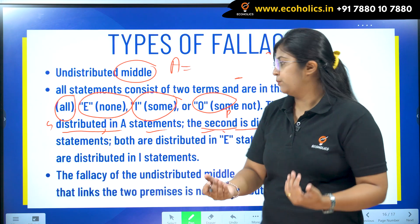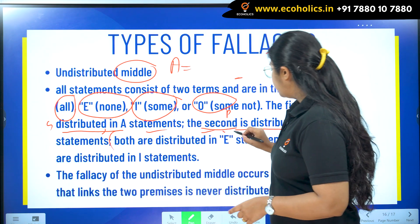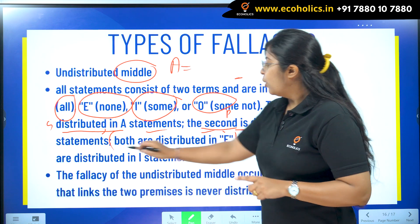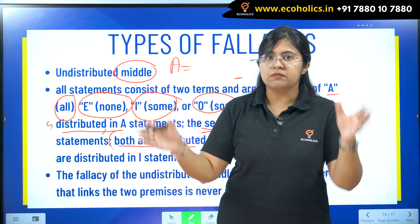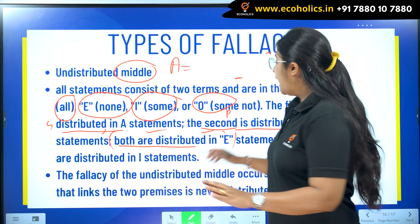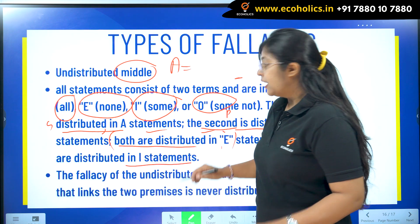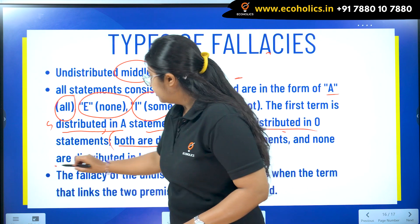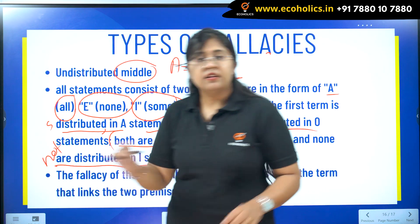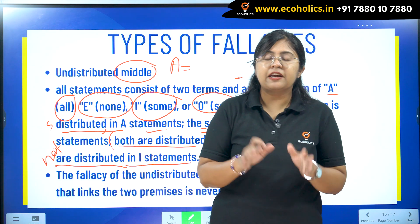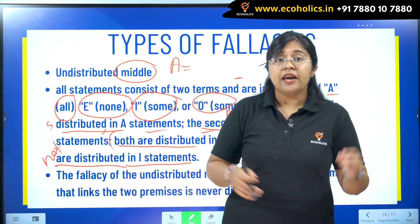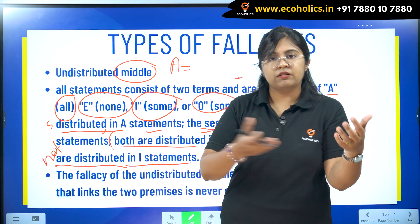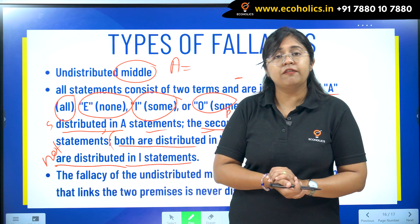In the E type of sentences, which are universally negative, both terms — subject and predicate — are distributed. In the I type of sentences, neither subject nor predicate is distributed; both are undistributed. Because of these rules, we can find the links between the first term, the middle term, and so on, and that is why we can find out valid conclusions.